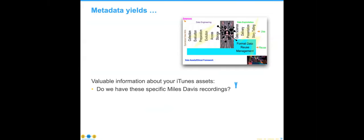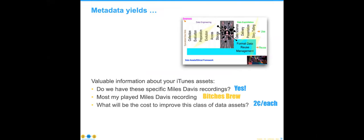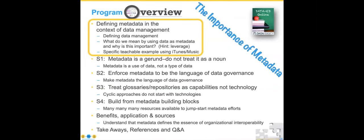Once again, metadata yields valuable information about your assets. Do we have these specific Miles Davis recordings? Yes indeed. What is my most played Miles Davis recording? A particular song pops up. What will it cost to improve this class of data assets? If I had low-fidelity recordings and somebody offers high-definition quality for two cents per song, that might be very nice. Could I listen to the entire album before dinner? Not easily in this case because it's a live recording that's almost two hours long. So that's the context and the teachable example.